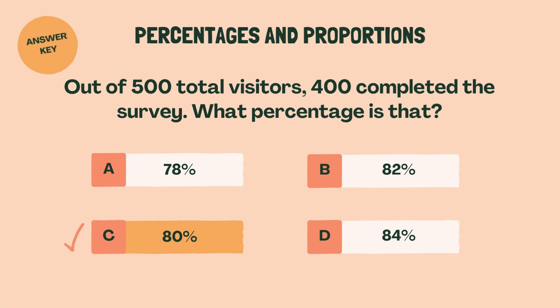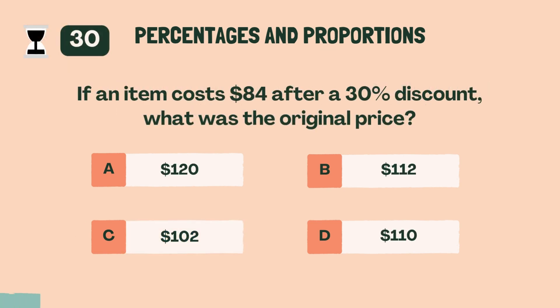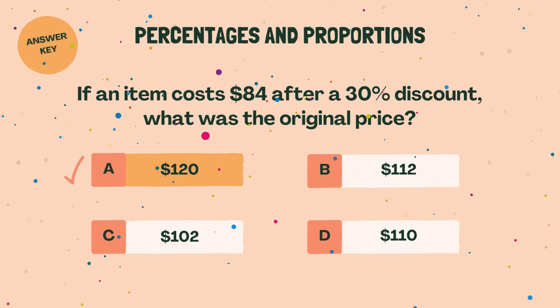If an item costs $84 after a 30% discount, what was the original price? A, $120.